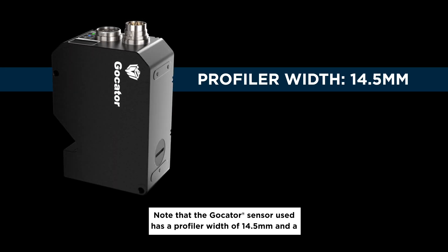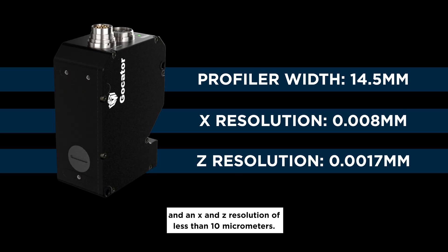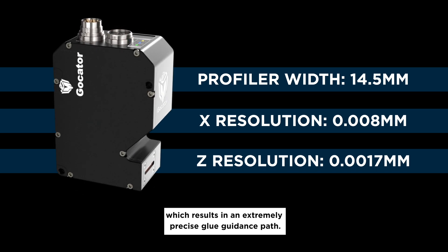Note that the Gocator sensor used has a profiler width of 14.5mm and an X and Z resolution of less than 10 micrometers, which results in an extremely precise glue guidance path.